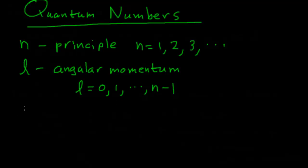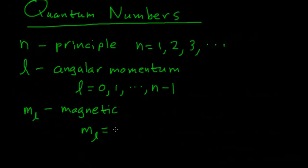The final quantum number is M-sub-L, sometimes called the magnetic quantum number because it's related to certain magnetic properties the electron can have when orbiting an atom. M-sub-L can be as small as negative L, counting up in integer steps through 0, all the way to as large as positive L.